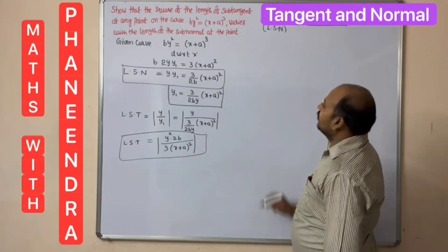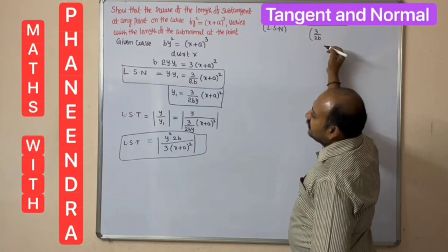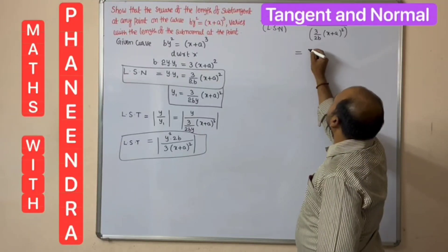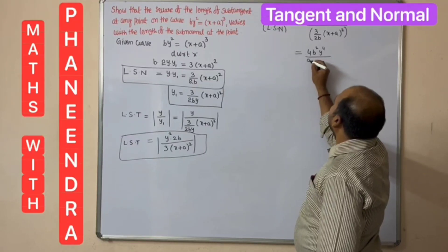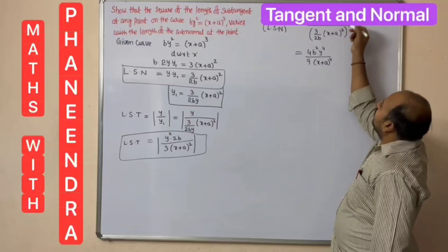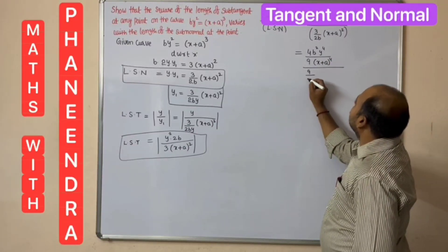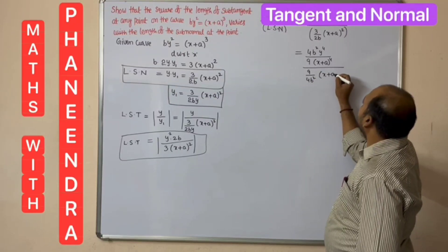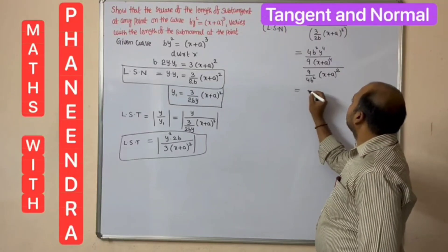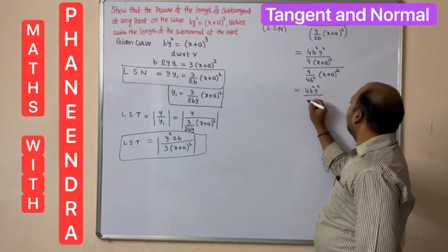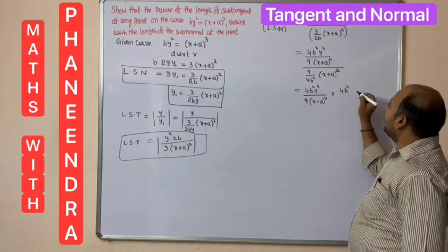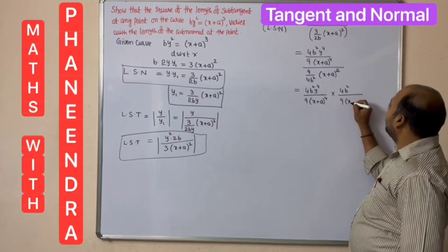So (LSD)² / LSN = [2b·y² / (3(x+a)²)]² ÷ [3(x+a)² / (2b)]. Squaring the numerator gives 4b²·y⁴ / [9(x+a)⁴]. Dividing by LSN = 3(x+a)²/(2b), the LSN flips to become 4b² / [9(x+a)²] in numerator position... Simplifying the whole expression.